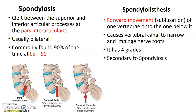Spondylolysis versus spondylolisthesis — another trick the boards love because these words look so similar. Spondylolysis is a cleft between the superior and inferior articular processes at the pars interarticularis, usually bilateral, and found 90% of the time at L5-S1. Spondylolisthesis is forward movement or subluxation of one vertebra onto the one below it. We often do flexion and extension lumbar spine views looking for that forward movement. Meet me back here for chest and abdomen pathology.